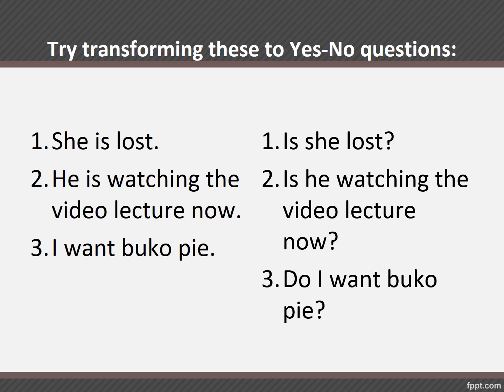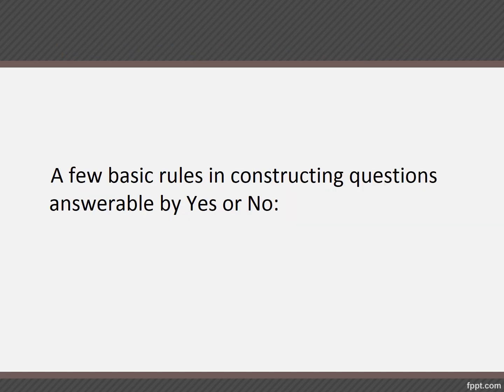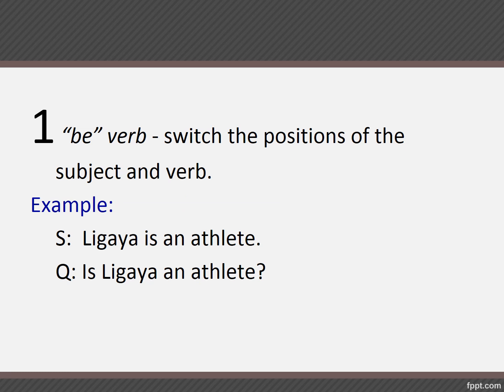First rule: look at sentence number one — it uses a linking verb. Number two uses a verb phrase, meaning a combination of a main verb and a helping verb. And the third involves an action verb. Now, the first type is answered by yes or no. So the first rule: if the sentence uses a be verb, you simply switch the positions of the subject and the verb — you will not introduce anything else, you stick to the be verb used in the same sentence. So 'Ligaya is an athlete' simply becomes 'Is Ligaya an athlete?'